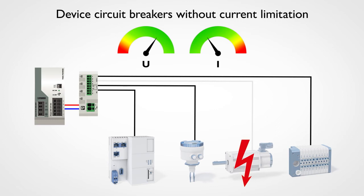In the event of an error, device circuit breakers without current limitation allow the maximum current of the power supply to flow, just like a mechanical circuit breaker or a typical fuse.